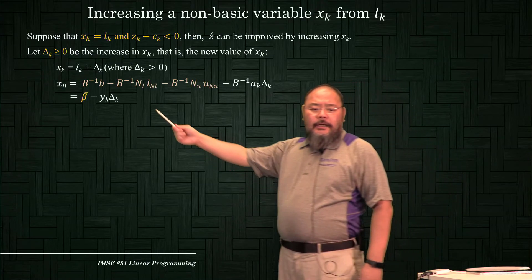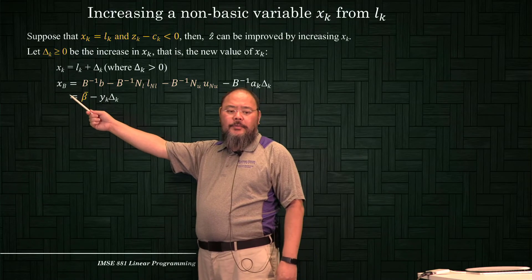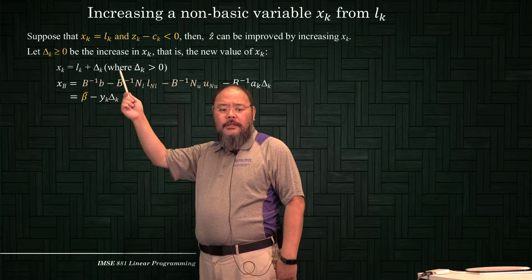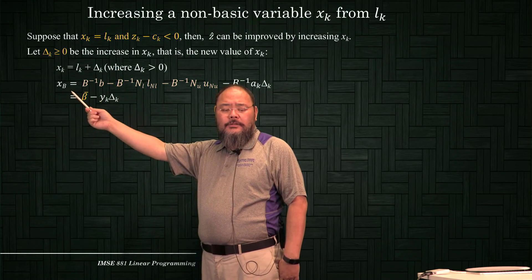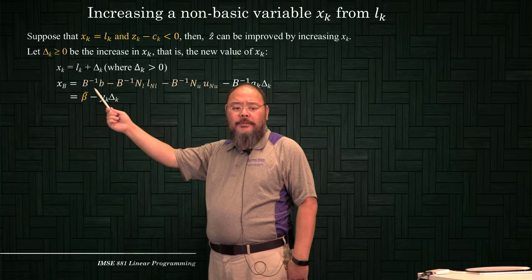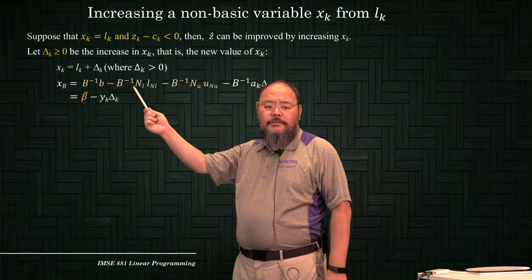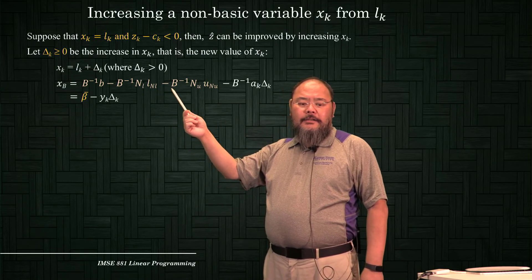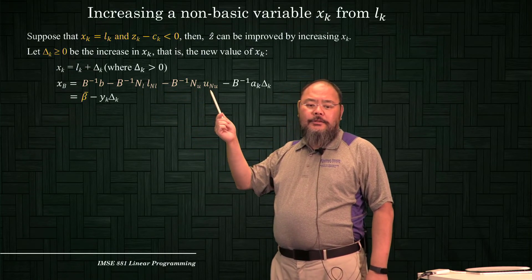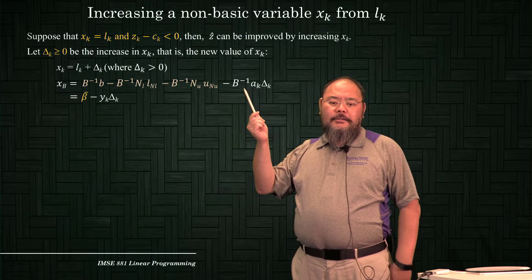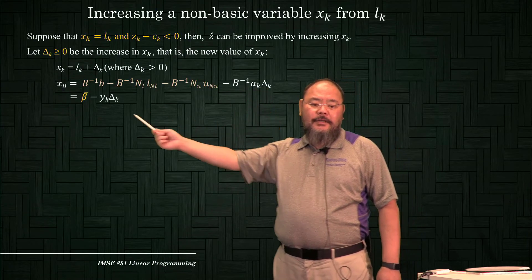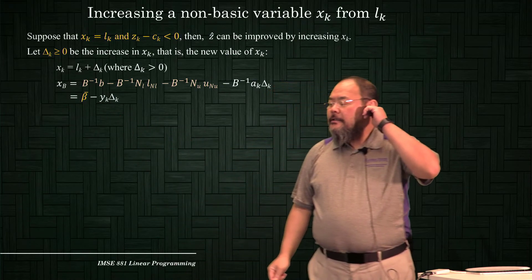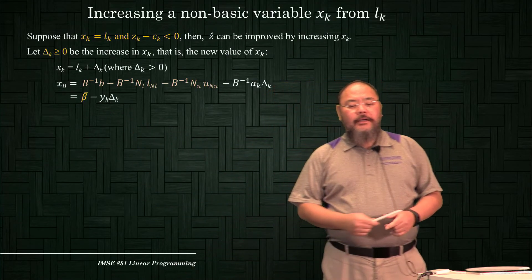Look at this equation like before. The xb — the current basic solution — this is the entering non-basic variable. The current basic variable equals b-inverse times b, minus b-inverse times NL times xNL, minus b-inverse times NU times xNU, and minus b-inverse times ak times delta_k — basically negative yk times delta_k.